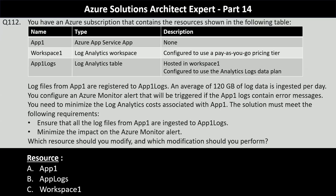You need to minimize the Log Analytics cost associated with App 1. The solution must ensure that all log files from App 1 are ingested to App 1 Logs and minimize the impact on the Azure Monitor alert. The first part asks which resource to modify — the options are App 1, App 1 Logs, and Workspace 1. The resource you should modify is Workspace 1, the Log Analytics workspace where the logs are ingested. Modifying this resource helps manage costs associated with log ingestion.